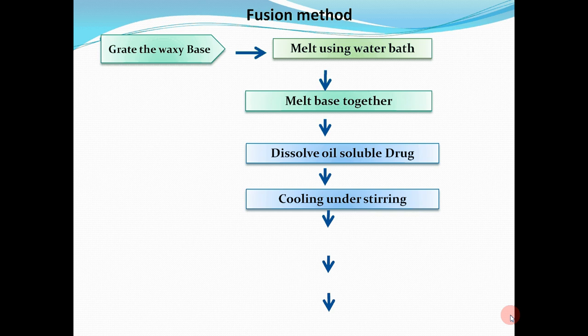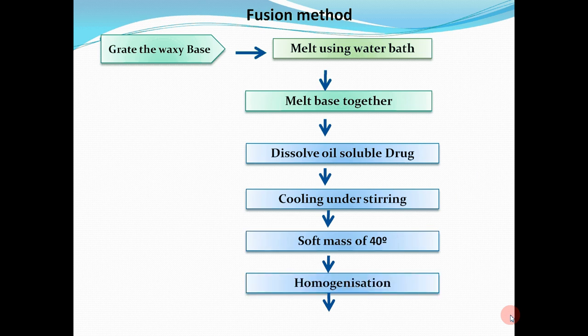The fusion method: grate the waxy base and melt it using a water bath. Some ointment bases contain solid ingredients like white beeswax, cetyl alcohol, stearyl alcohol, and hard paraffin. After melting, dissolve the oil-soluble drug at a specific temperature. Then cool under continuous stirring until a soft mass is produced at around 40°C. The homogeneous mass is then filled into the container.